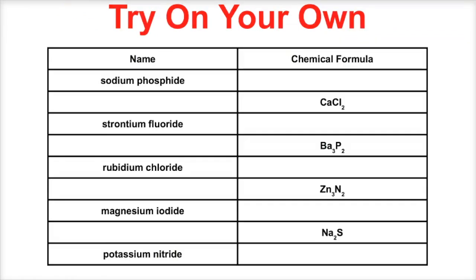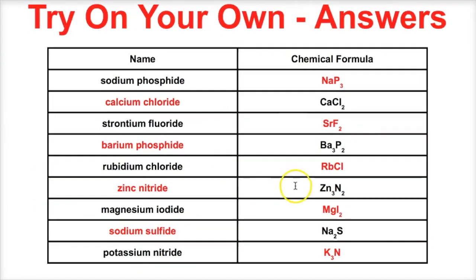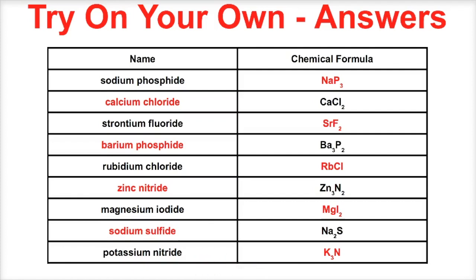Now that we've worked through some example problems, try these on your own. Pause this video and try to fill in the table: figure out the chemical formula for sodium phosphide, the name of this compound, and the chemical formula for strontium fluoride. Take about five minutes, then check the answers. Hopefully you got them all correctly — 100%! If you like what you see, click the subscribe button in the bottom right-hand corner, and feel free to leave any comments or questions below. I hope you found this helpful.